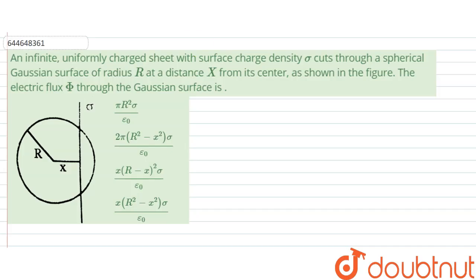Hello, we are given another question and the question says: an infinite uniformly charged sheet with surface charge density sigma cuts through a spherical Gaussian surface of radius R at a distance X from its center. The electric flux through the Gaussian surface is what?